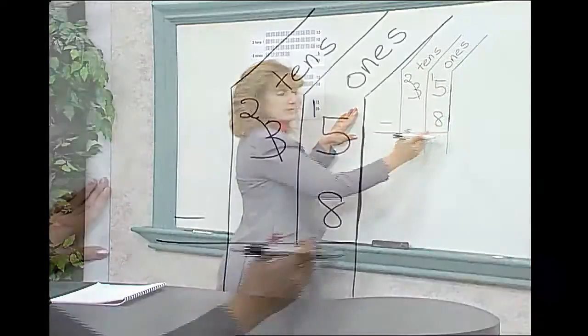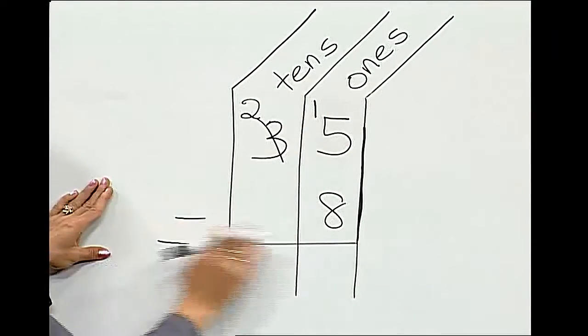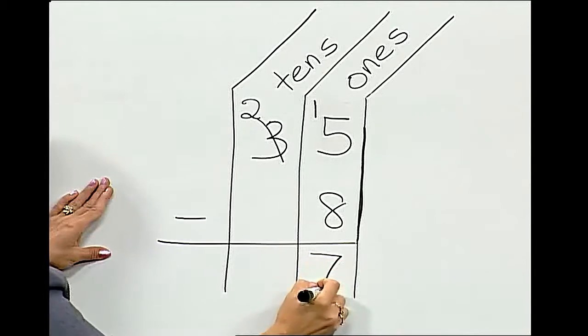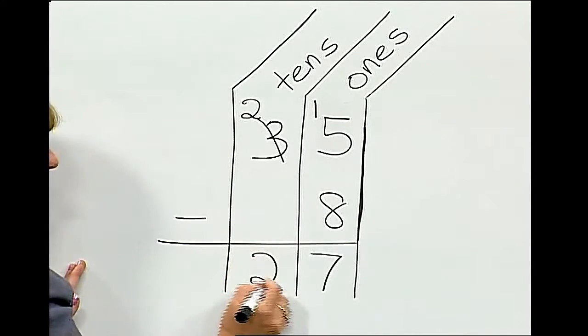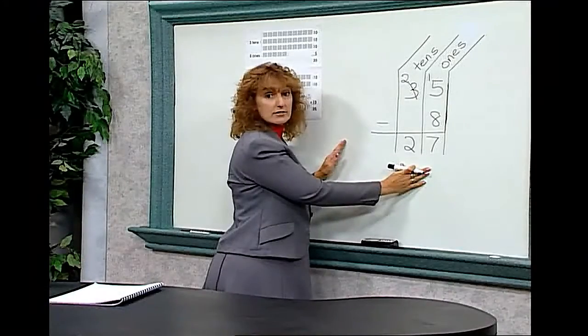We can now subtract our ones column. Fifteen minus eight is seven. Bring down the two. That gives us twenty-seven as our difference.